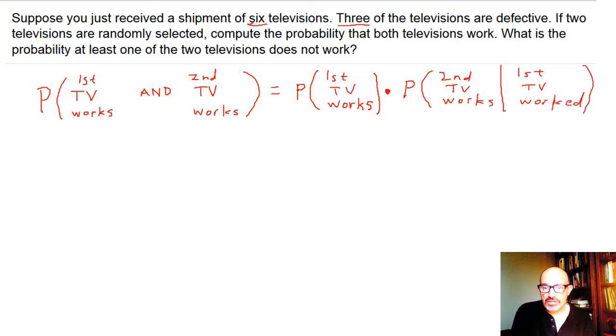If you are pulling TVs out of the truck, and there's six of them, and three of them work, the probability that the first TV works is three over six. And now, there are five TVs left on the truck, and two of them work. So the probability that the second TV works is two over five.